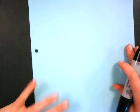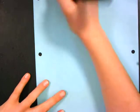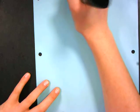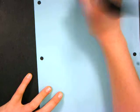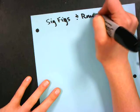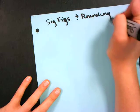Okay, so I know that you guys are wanting to get a little bit more practice with significant figures. Specifically, this one is going to be on sig figs and rounding.